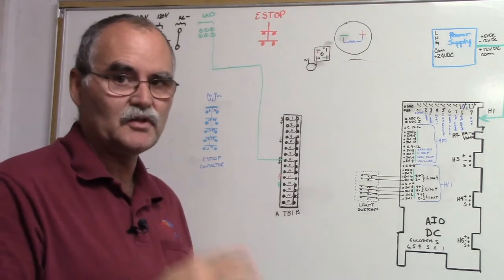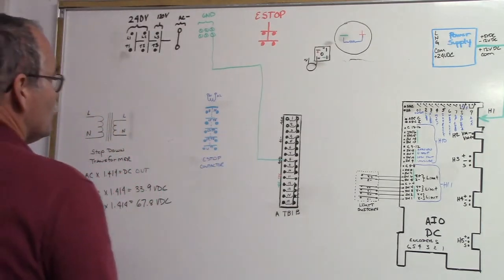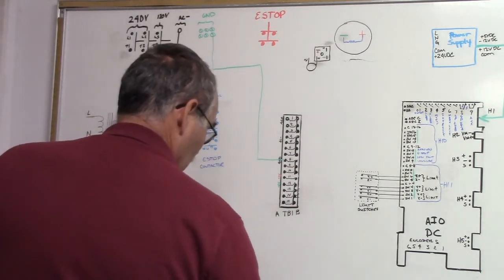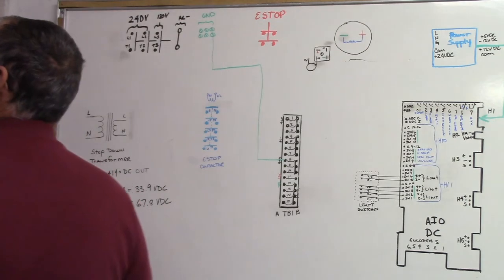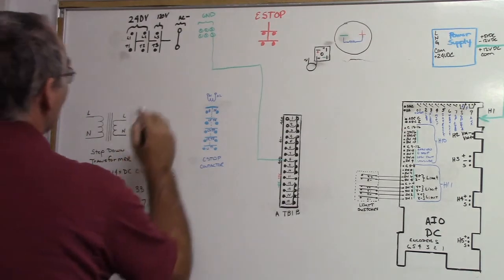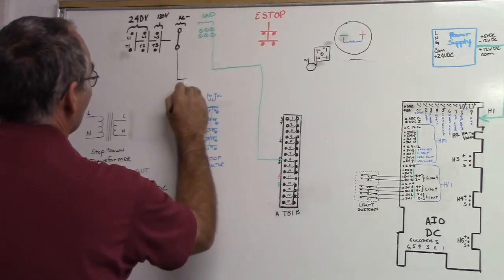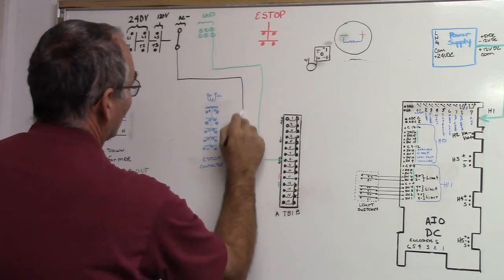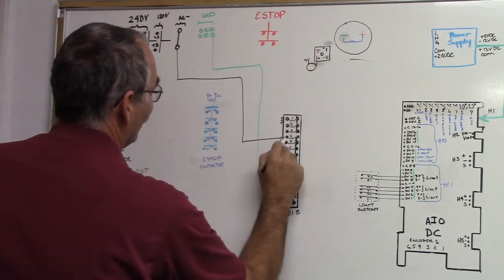So there's our ground. Let's do our AC minus. AC minus is going to TB1-4a. So here's our AC minus and we're going to TB1-4a.